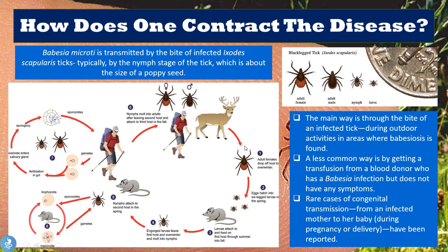Starting at number one in the diagram: adult females drop off hosts to overwinter, and eggs hatch into six-legged larvae in the spring. The larvae attach to rodents — the first host — feeding through summer and into fall, then leave and molt into nymphs over winter. In spring, nymphs attach to a second host, which can include rodents or humans, who may become severely infected. This is the nymph stage in which the Ixodes scapularis tick bites humans during outdoor activity. The nymphs then molt into adults after leaving the second host and attach to a third host — roe deer, humans, or cattle — in the fall, and the cycle continues.